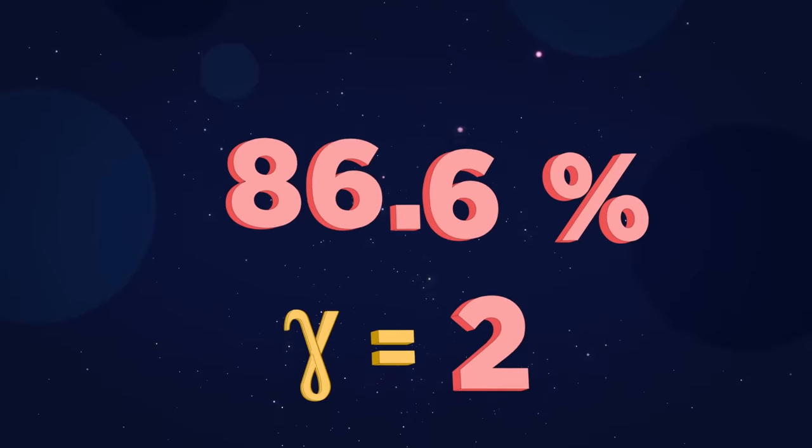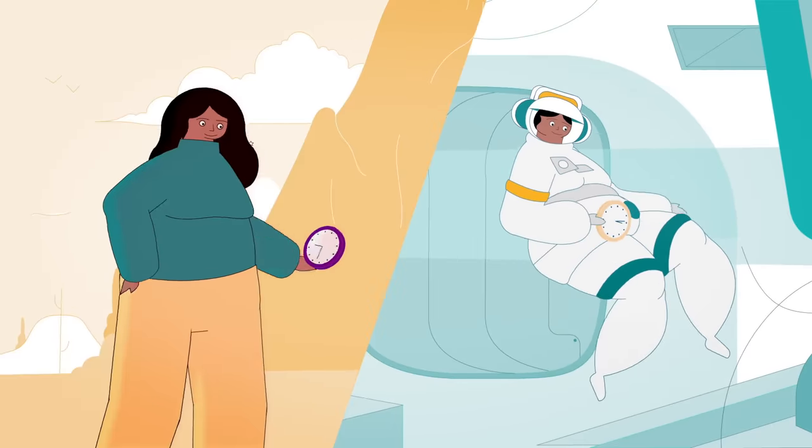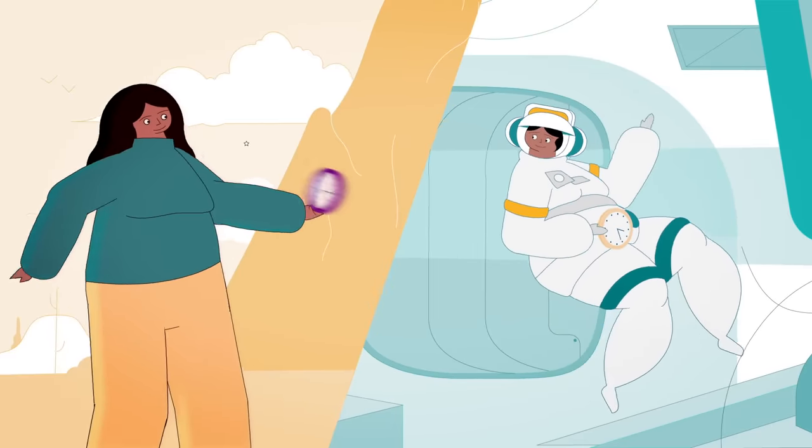At 86.6% the speed of light, the Lorentz factor is 2, meaning time will pass twice as slowly aboard the spaceship. Of course, Stella won't notice time slowing down.